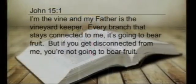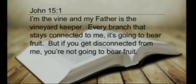In chapter 15 verse 1, as they walk through the vineyards, Jesus starts this teaching using the vines and grapes. He says: 'I am the vine, my Father is the vine keeper. Every branch that stays connected to me is going to bear fruit. But if you get disconnected from me, you're not going to bear fruit.' He probably cuts off a piece of the vine and shows them: if it's not connected, it won't give grapes. In the same way, you need to stay connected to me.